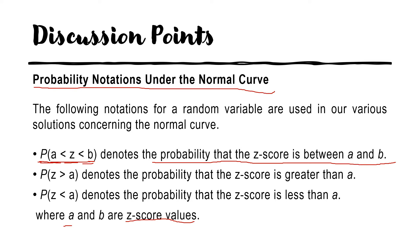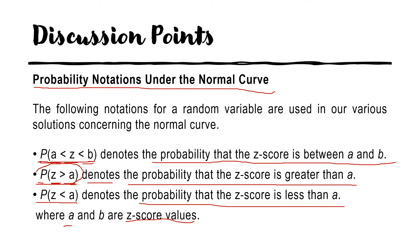For the second notation, P(Z > A): A is a Z-score value and represents a lower limit. If your computed Z is greater than your lower limit A, it denotes the probability that the Z-score is greater than A. For the third notation, P(Z < A) denotes the probability that the Z-score is less than A. We use the less-than symbol to represent this.